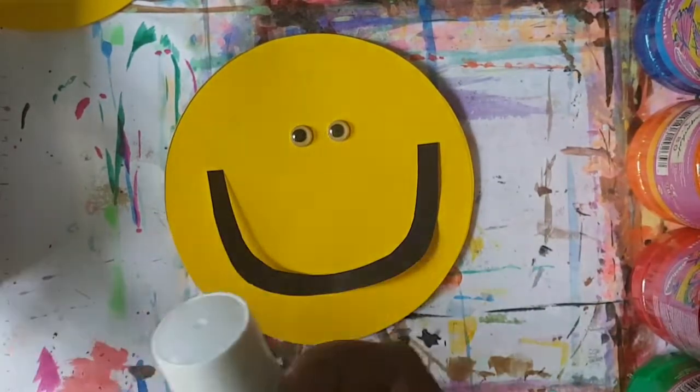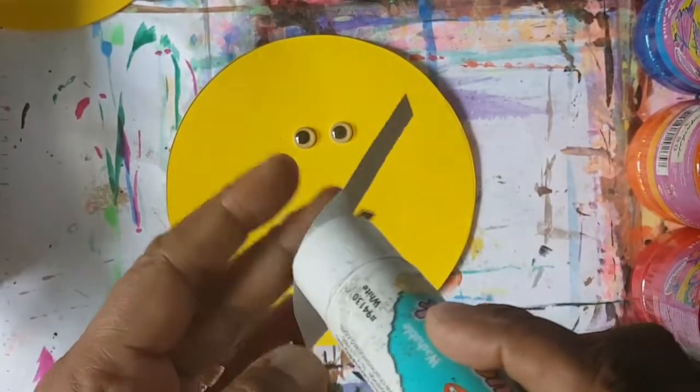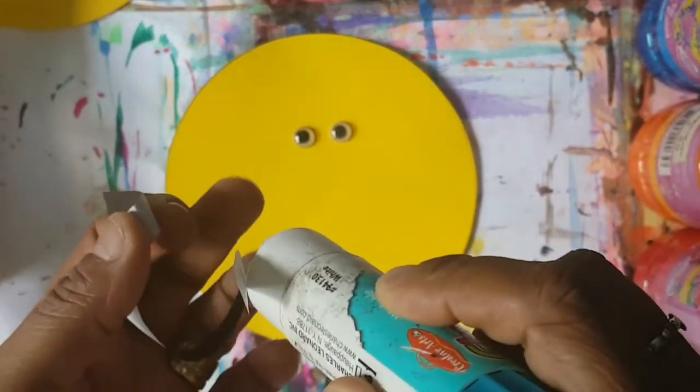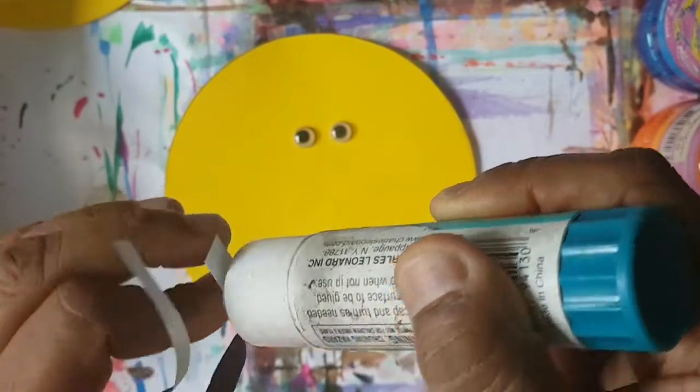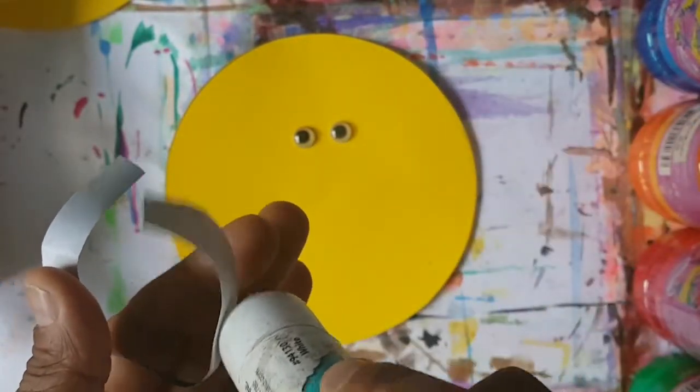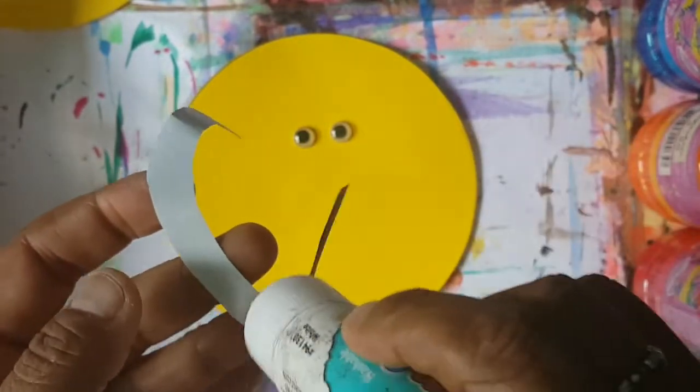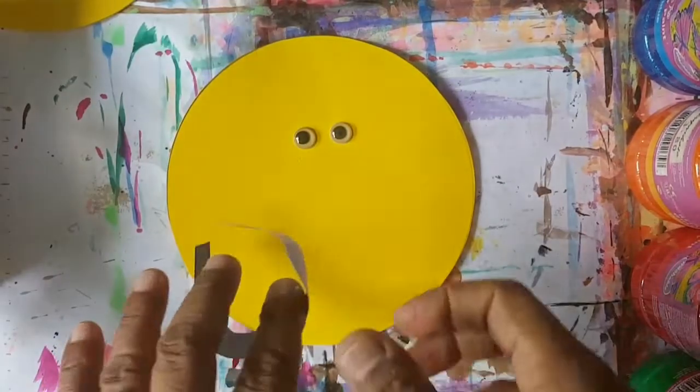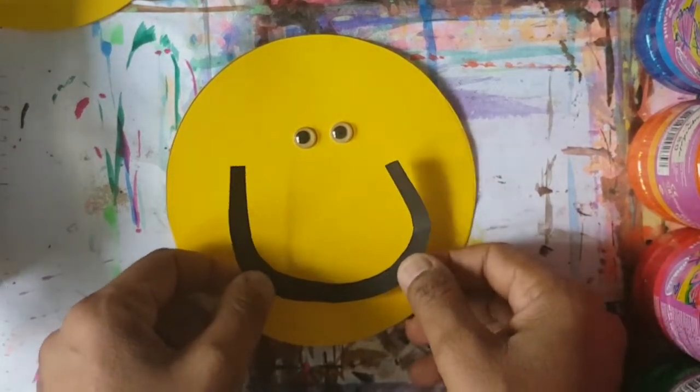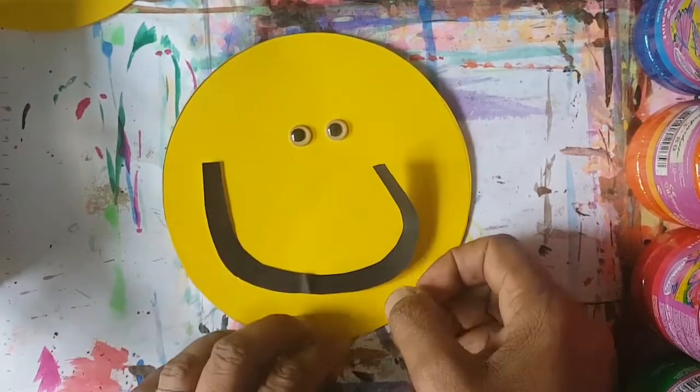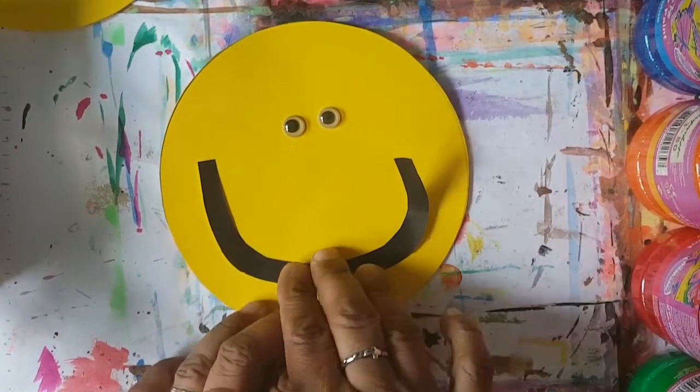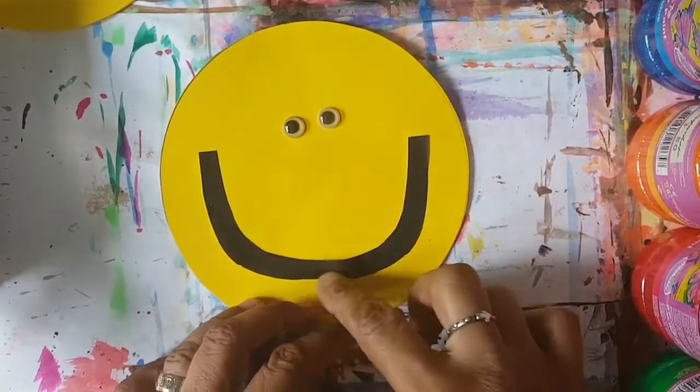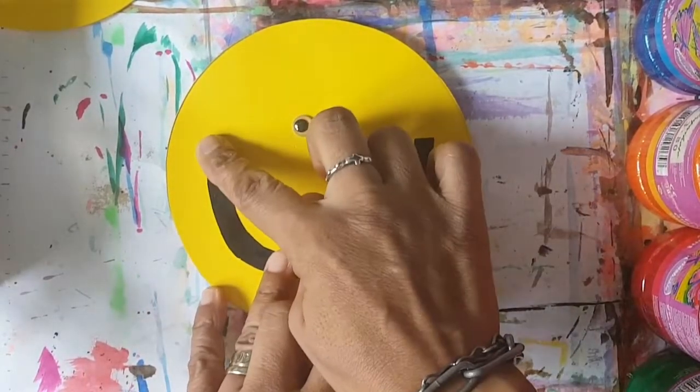I'm going to go ahead and stick this down here like that. So we're going to get our glue stick and we're going to add the glue to the smile. I've made this smile a very thin smile. You can go ahead and make your smile a big, wider smile if you wish. So I'm going to try to place this in the center. You may have to maneuver it around. I think that's fine.